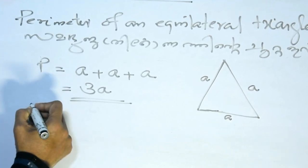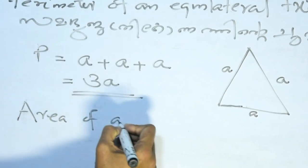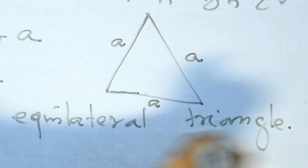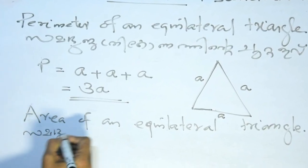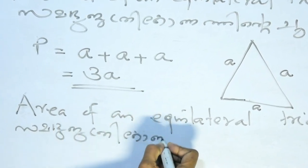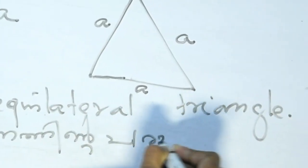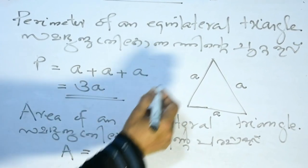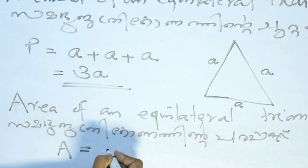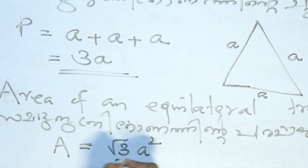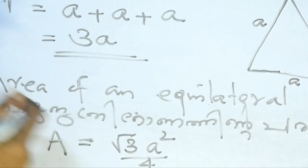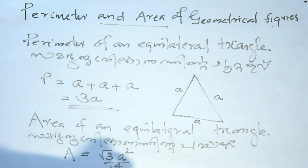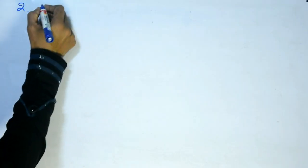This is the area — Area of Equilateral Triangle. The side is A, and the formula is root 3 times A squared divided by 4. That is, Area = (√3/4) × a².